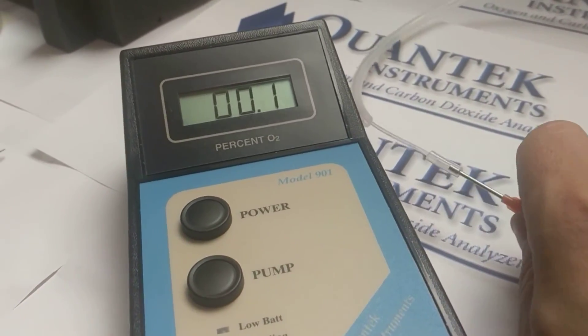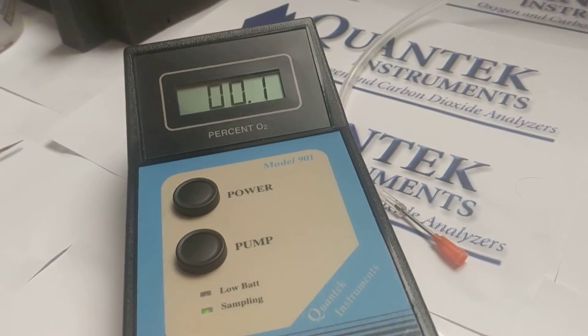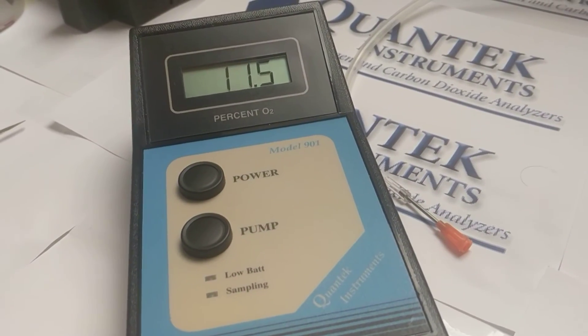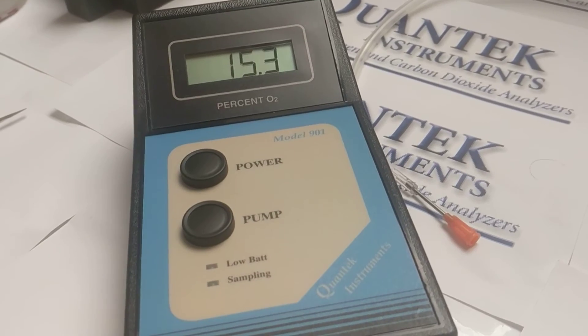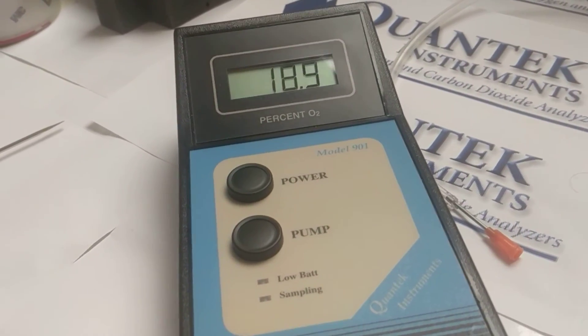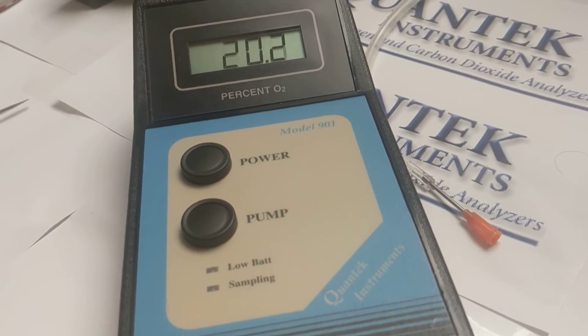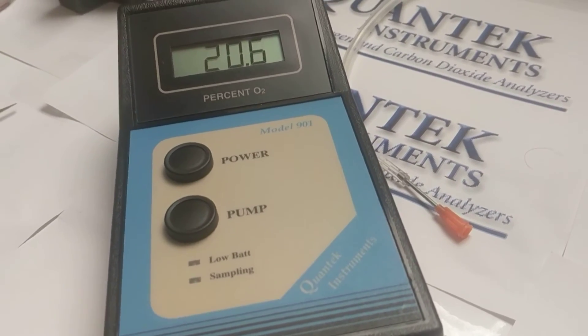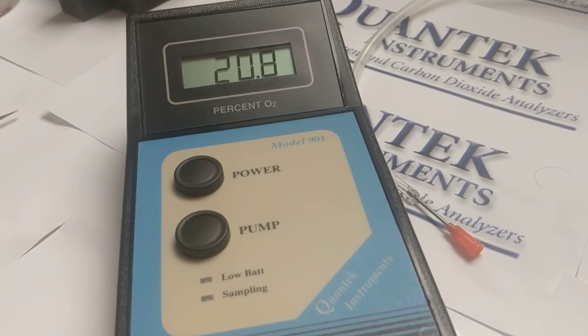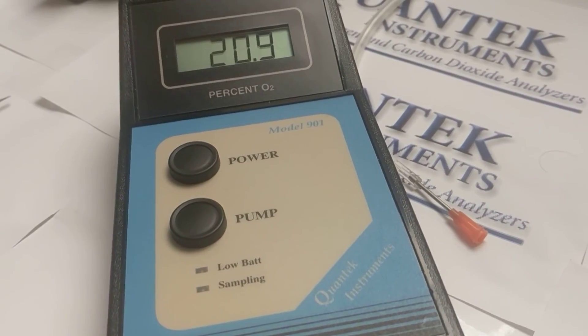And for the final test, what we're going to do is press the pump button. And we should end up at 20.9%. But again, the sensor has an accuracy of plus or minus 1% of concentration, which means that if it starts at 20.7, 20.8, 20.9, 21, this is going to be statistically insignificant once you test a package that has say less than 3% oxygen in it.